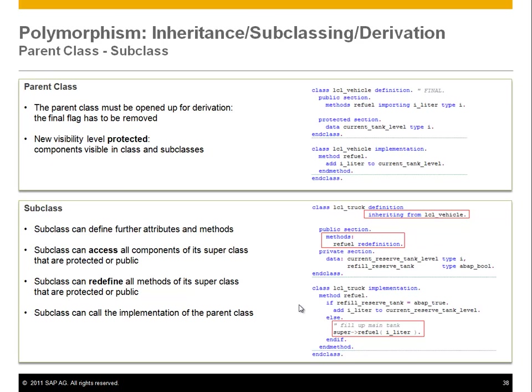Let's look at a code example to see how this really works. We have a parent class — a vehicle definition with a public methods section, again with refuel. Now we have something new: a new visibility level called protected. Protected means whatever is defined there is not visible to the outside, but is visible within the class itself and also to subclasses. We now distinguish between protected — visible to subclasses — and private, which is only for the class itself. Since we want the current tank level to be visible in subclasses, we put it in the protected section.